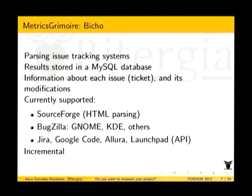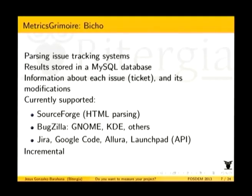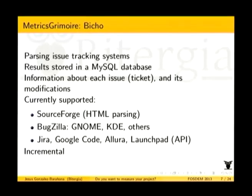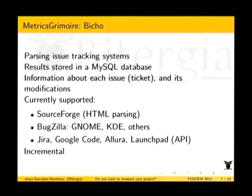Bicho is a tool for retrieving information from issue tracking systems and bug tracking repositories, storing results in a MySQL database. It uses the API of the bug tracking systems. It works with SourceForge, Bugzilla — including GNOME Bugzilla, KDE Bugzilla, and others — and now also works with Jira, Google Code, Launchpad, etc. The idea is simple: you go to the repository, ask for all the tickets, then go through them one by one getting each ticket and all its changes, so you get the whole history including flags, who made changes, attachments, and things like that.